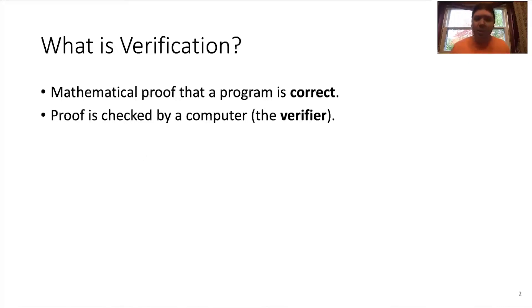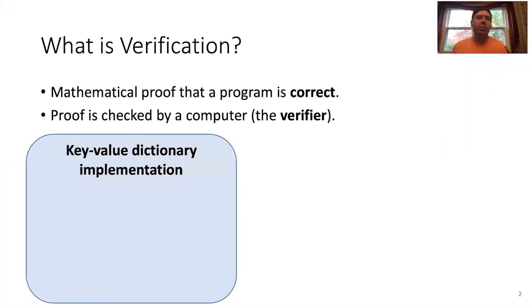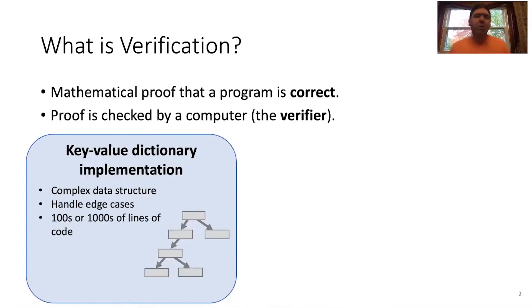So, this is a simple example of what I mean. Let's suppose we're implementing some kind of key-value dictionary. So this implementation is going to have some sort of data structure, probably like a binary tree or a hash table or something like that. And there's going to be all this code, it's going to handle all these edge cases like what if there's an empty tree versus a non-empty tree and so on. And the implementation will probably span hundreds or thousands of lines of code.